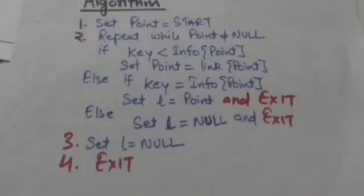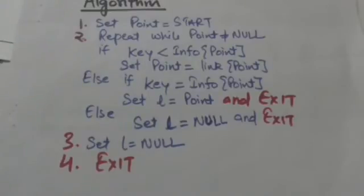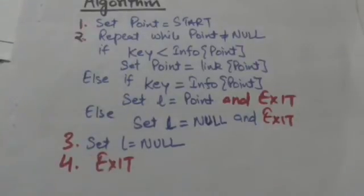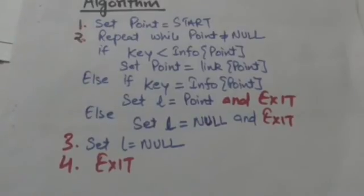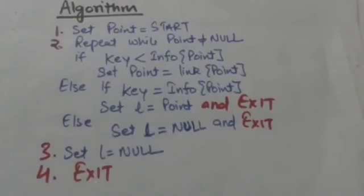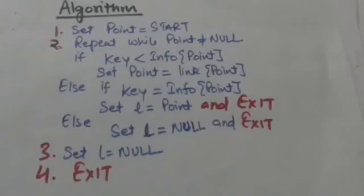If value key is equal to the content of the node, then the value of point is assigned to the variable L and the algorithm stops there. The value of L is then the location of the node where value key first appears in the linked list.